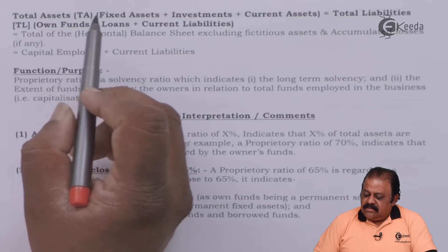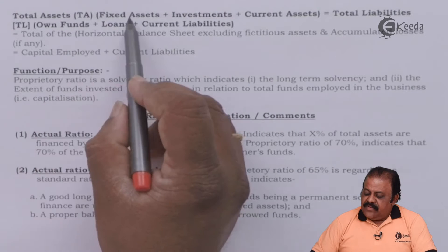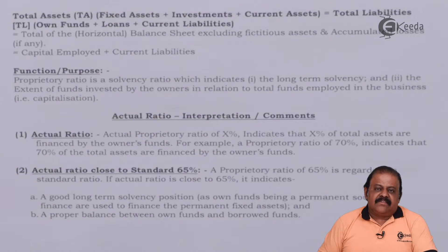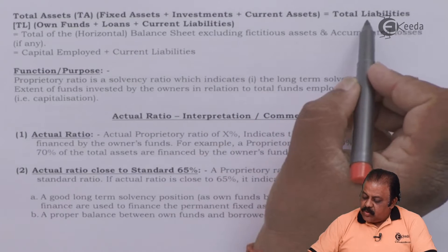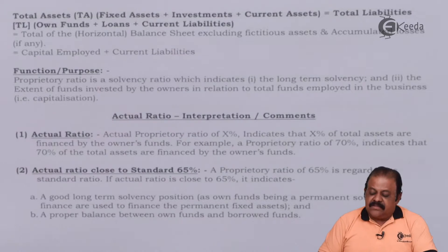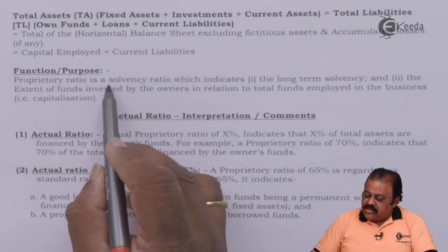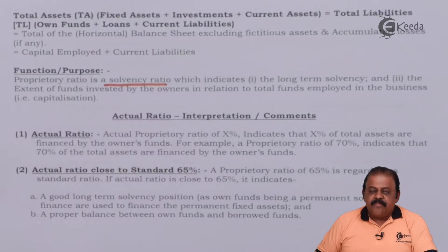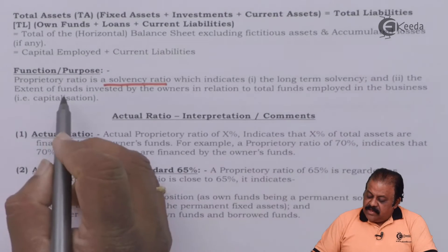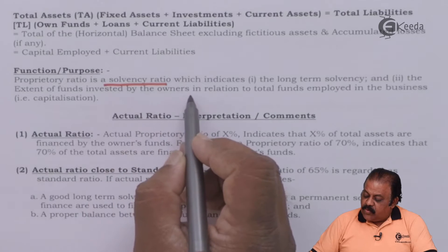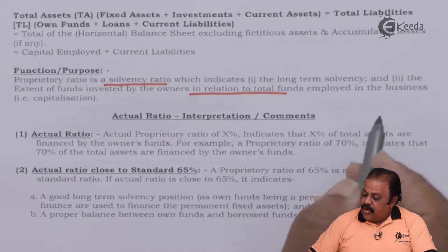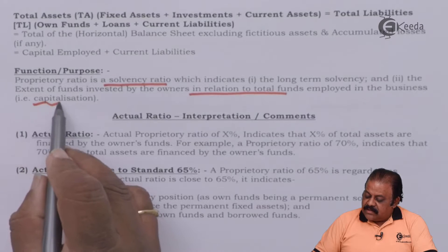Total assets include fixed assets plus long-term investment plus current assets. Total liabilities include own funds plus loans plus current liabilities. Proprietary ratio is a solvency ratio which indicates long-term solvency — the extent of funds invested by the owners in relation to total funds employed in the business, that is, capitalization.